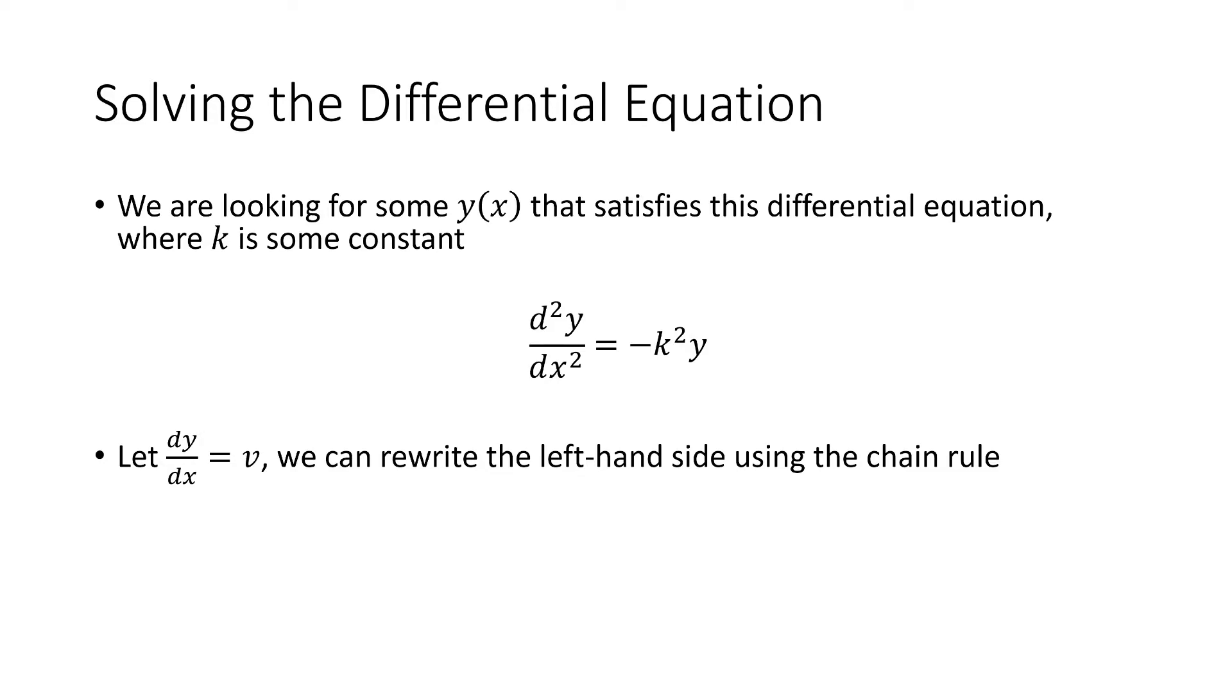We have the second derivative of y with respect to x equals v times the derivative of v with respect to y equals negative k squared y.